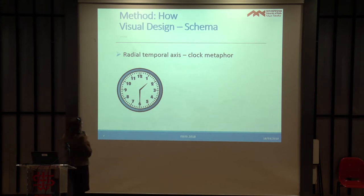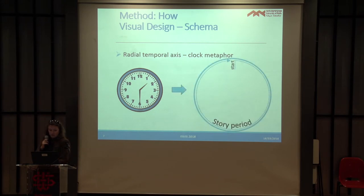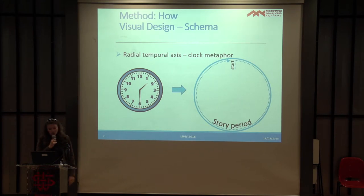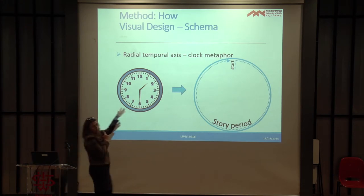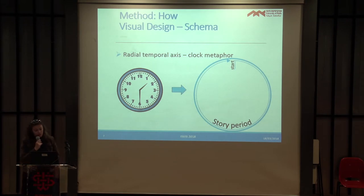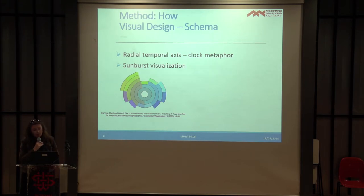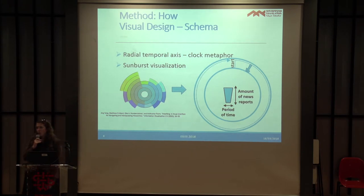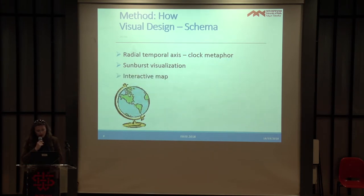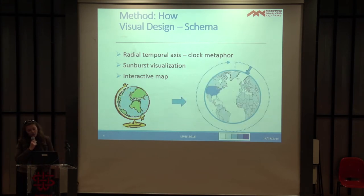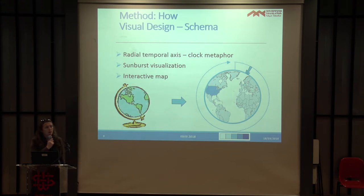We chose to use a radial temporal axis, so that the whole story period can span 12, 24, or even more days. The beginning of the story starts at the top of the clock, corresponding to the time the story starts to be reported. We were inspired by spiral visualization, without the hierarchy. We created an inner circle and placed the story around it using bars, where the width of each bar represents a period of time and the height shows the number of reports. We put an interactive map inside this circle to color the countries that report about the news, using a heatmap to show the difference in amount of reports.